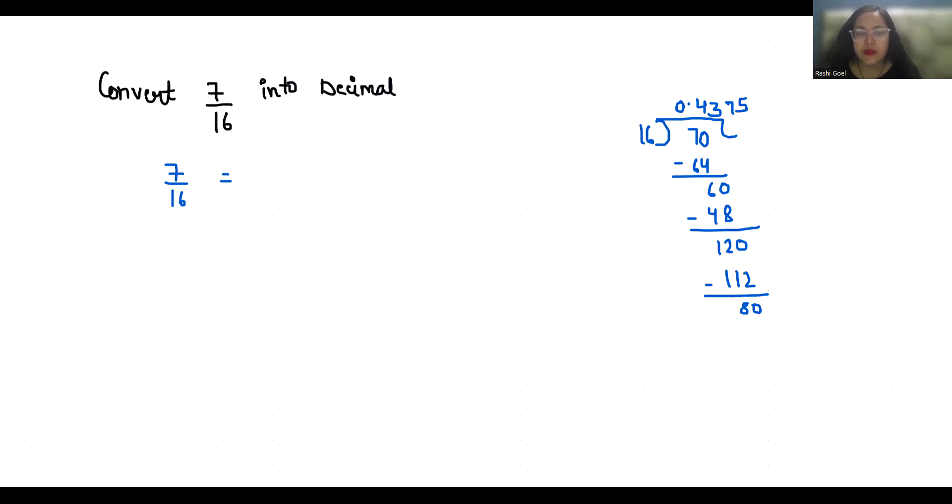So 7 by 16 in terms of decimal is 0.4375. I hope it's clear and you find it useful. So please give a thumbs up and subscribe to my channel. Stay tuned for more upcoming videos.